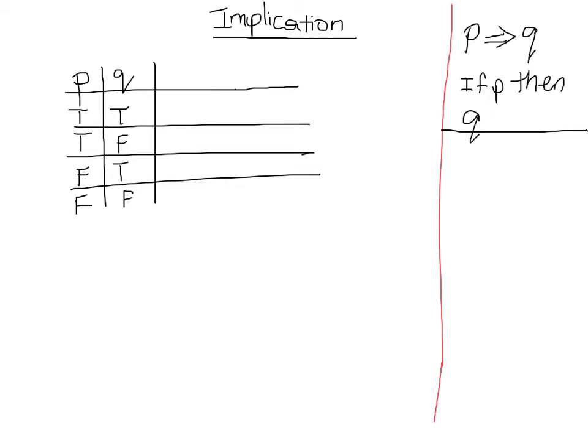So going back to our original example, P was it is raining and Q was I am wet. So P if P then Q means if it is raining then I am wet.